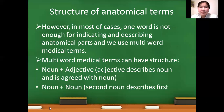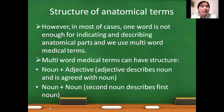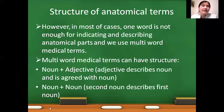The second type is noun plus noun structure. These types of terms are also known as non-agreed attribute. Here the second noun describes the first noun, and these two nouns are not matching — not in gender, not in case, nor in number.